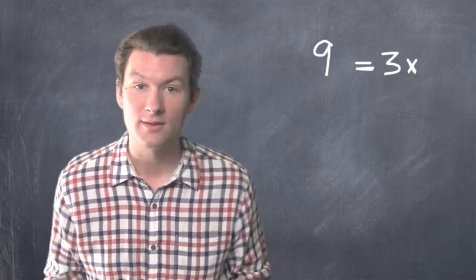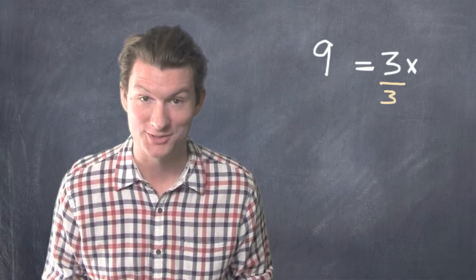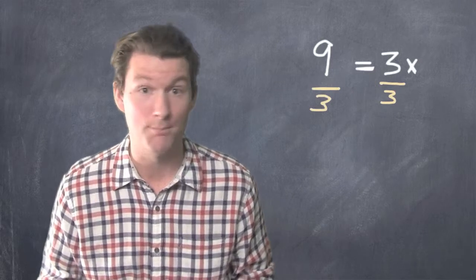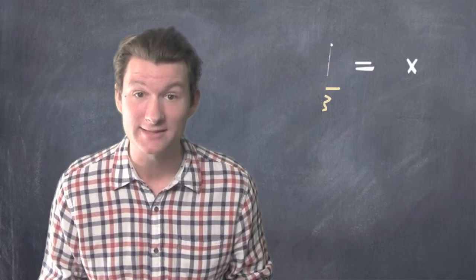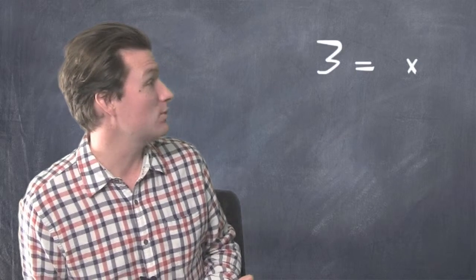And what are we left with? 9 equals 3x. We're almost there. We can divide by 3 on both sides. That gets the x by itself. And then 9 divided by 3 is 3.